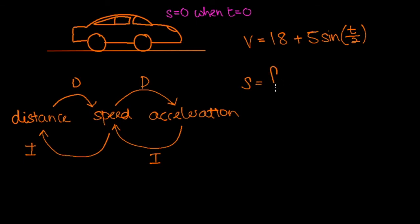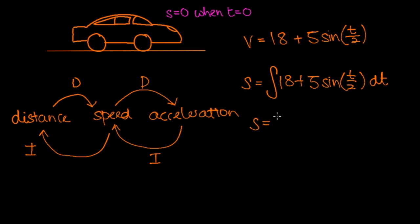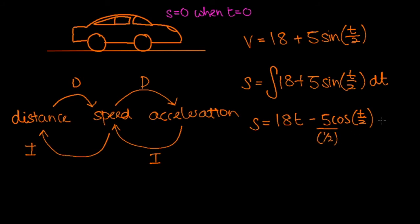Distance is equal to the integral of 18 plus 5 sine t over 2 with respect to time. The integral of 18 is 18t, and since the integral of sine is negative cosine, the integral of 5 sine t over 2 gives minus 5 cosine t over 2 divided by the inner derivative — which is a half — giving minus 10 cosine t over 2. So s equals 18t minus 10 cosine t over 2 plus a constant C.